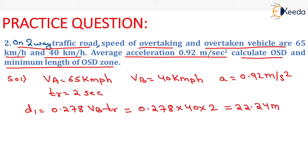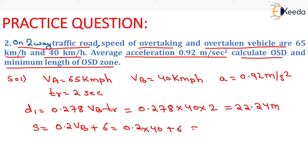We need to compute the value of S (minimum space headway), which equals 0.2 × VB + 6. Putting in VB as 40 km per hour, we get S equals 14 m. That is the minimum space headway.